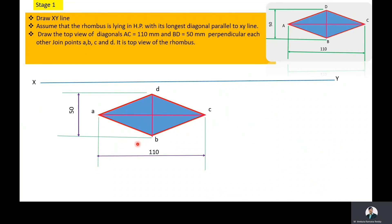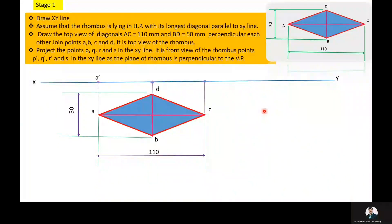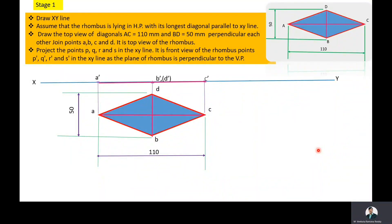Now we will draw the front view. Through points A, B, C, D of the rhombus, draw projectors towards the reference line. Name the projected points A dash, B dash, D dash, and C dash, then join these points. The A dash–C dash line is the front view of the rhombus when it is perpendicular to VP and the rhombus is on HP. Then we will move towards the second stage.